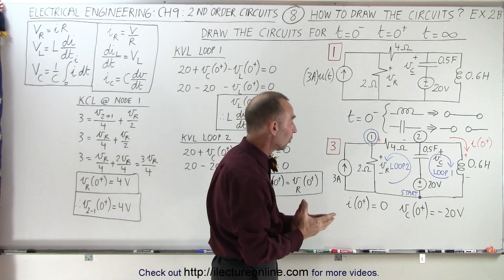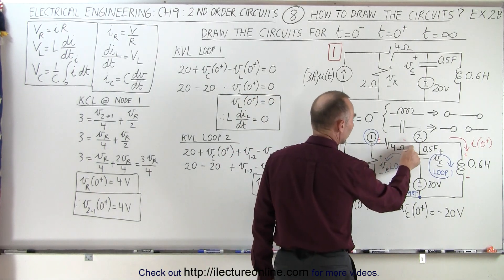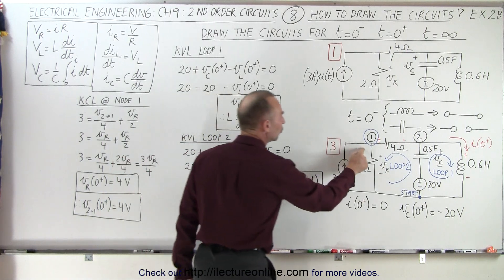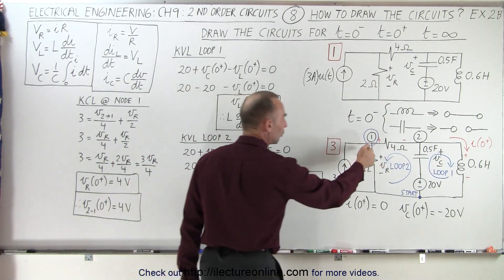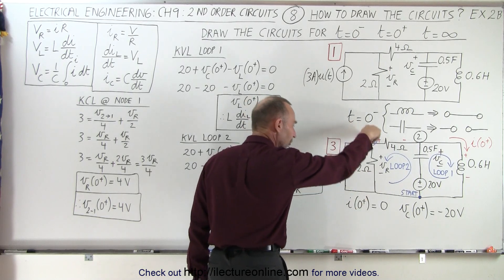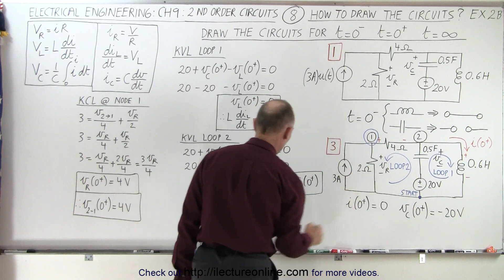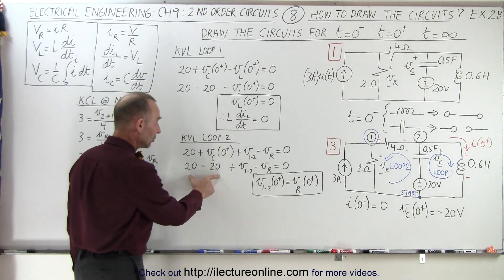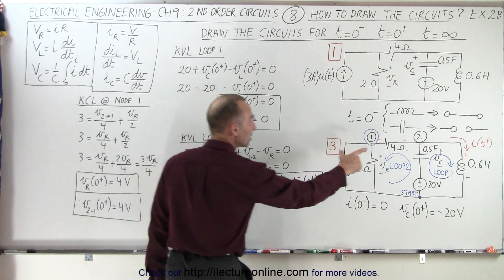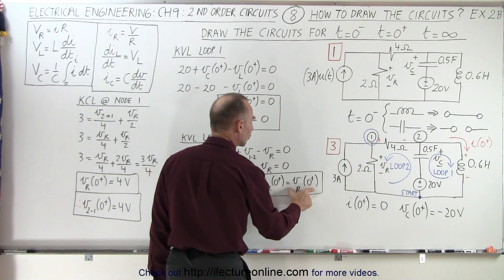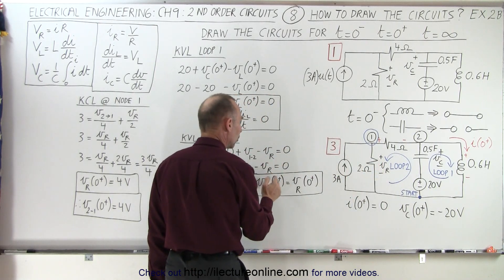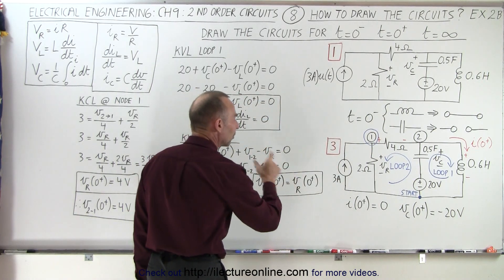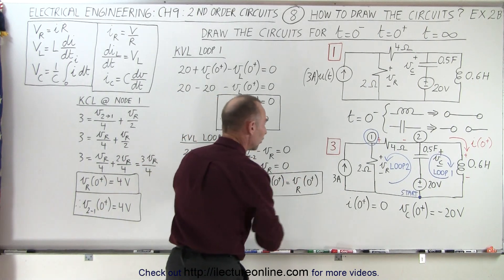We're taking a guess that this node is at a higher potential than this one. So when we go from here to here across the resistor, we have a voltage rise — a plus voltage between the two nodes from node one to node two. Then we have a voltage drop across the 2-ohm resistor. Again, the 20-volt rise and 20-volt drop cancel each other out, which means the voltage across the 4-ohm resistor must equal the voltage across the other resistor V_R at the moment right after the current begins to flow. We still don't know the voltage, but we know the two must be equal.